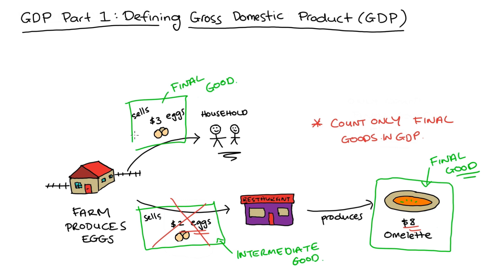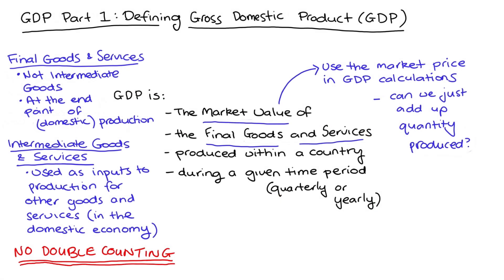When I defined intermediate and final goods, I was careful to include that we're only thinking about the productive process in the domestic economy. Countries do export goods and services, which are then used in the production of other goods in other countries — so they're intermediate goods in some sense. But they're really final goods; they're at the end point of the productive process in the domestic economy and should definitely count towards GDP. Even though they might be intermediate goods for overseas economies, they are final goods for the domestic economy.